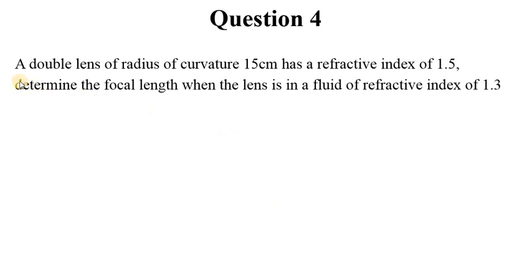Question 4: A double lens of radius of curvature 15 centimeters has a refractive index of 1.5. That is the property of the material used to make the lens. Determine the focal length when the lens is in a fluid of refractive index 1.3.